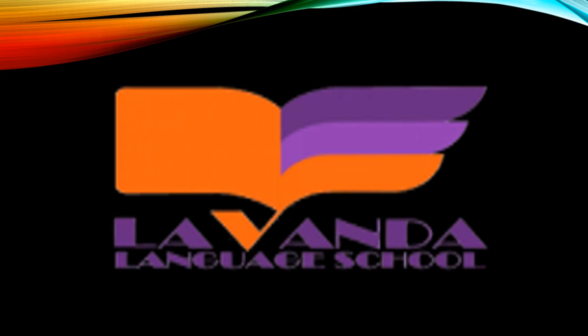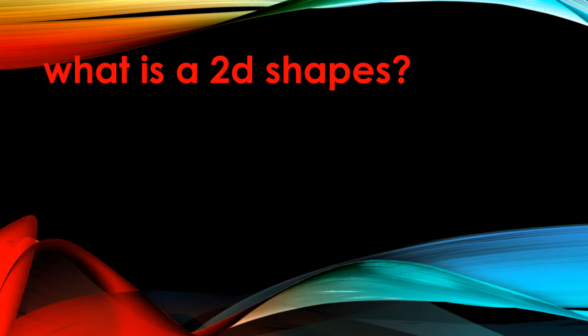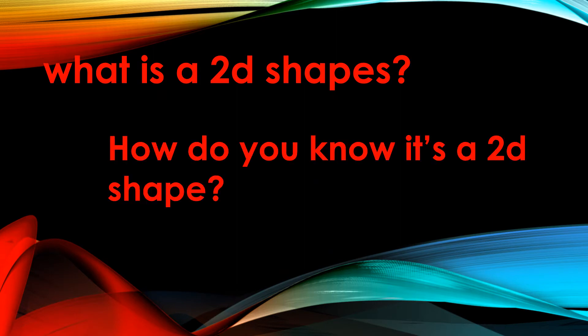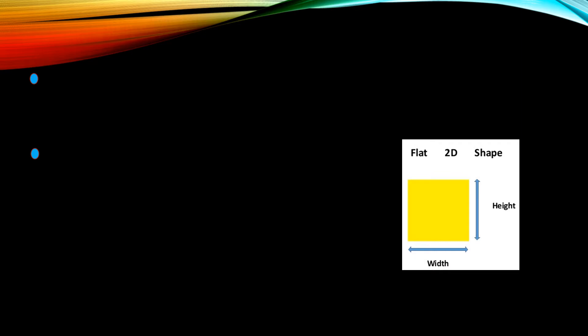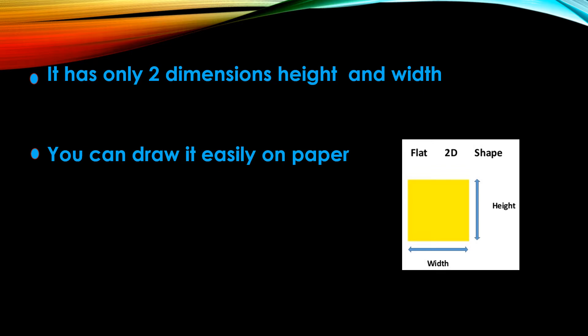Hello my dear students, how are you? I miss you so much. We are going to talk about 2D shapes. What is a 2D shape and how do you know it's a 2D shape? A 2D shape is flat — it has height and width. It has only two dimensions, which are height and width. You can draw it easily on a paper.